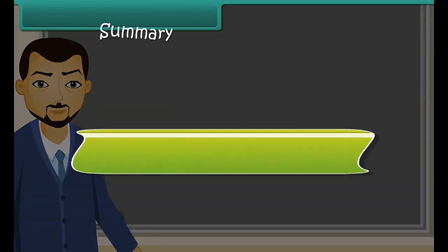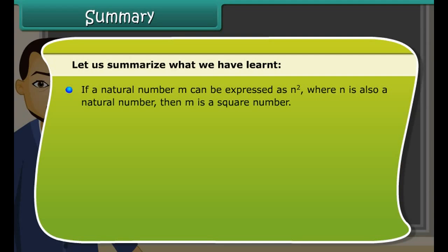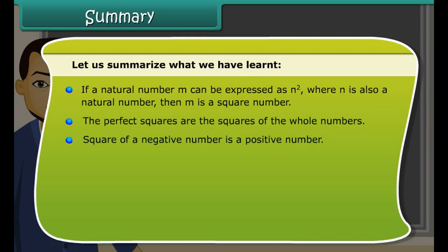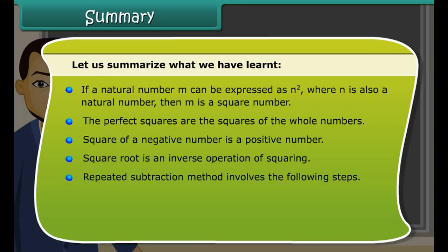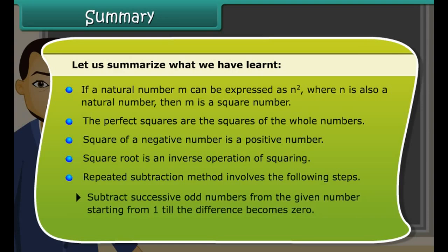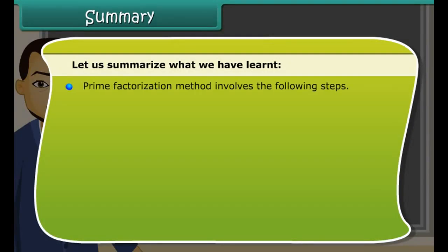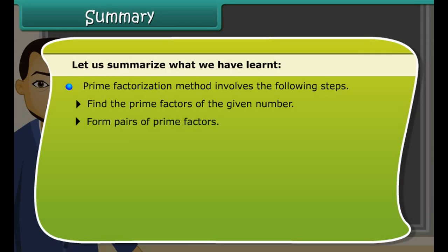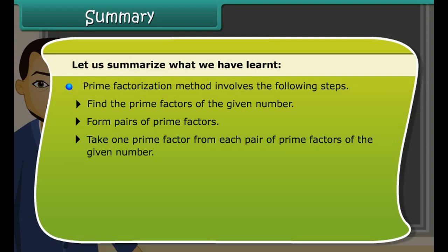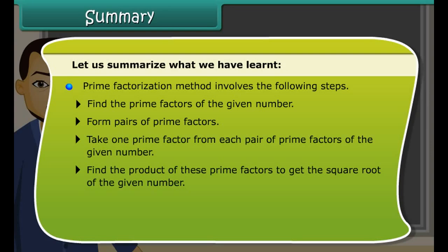Summary: If a natural number m can be expressed as n², where n is also a natural number, then m is a square number. Perfect squares are squares of whole numbers. The square of a negative number is a positive number. Square root is the inverse operation of squaring. The repeated subtraction method involves subtracting successive odd numbers starting from 1 until the difference becomes 0, then counting the steps. The prime factorization method involves finding prime factors, forming pairs, and multiplying one factor from each pair. The long division method involves finding the greatest number whose square is less than or equal to the first group of digits.